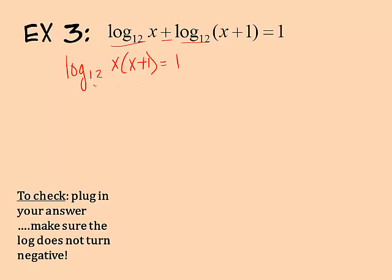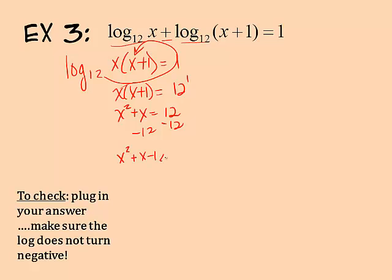I'm going to distribute this x on the left, so I have x squared plus x equals twelve. I want to get everything to one side, so I'm going to subtract twelve. X squared plus x minus twelve equals zero.